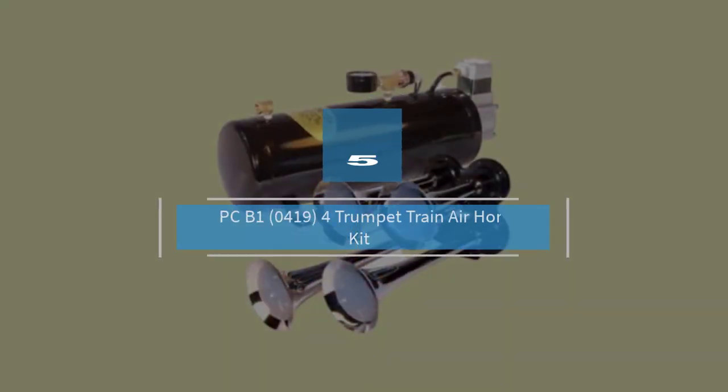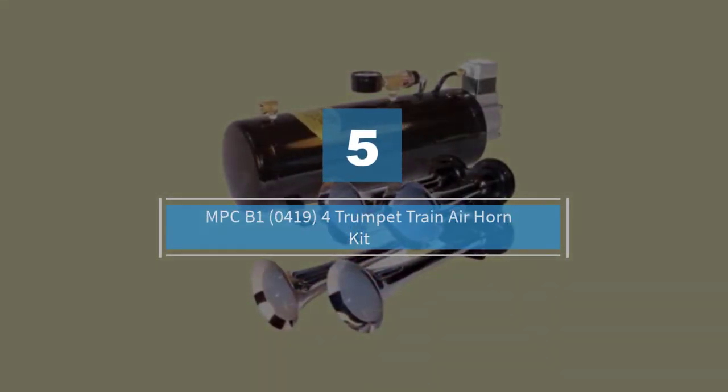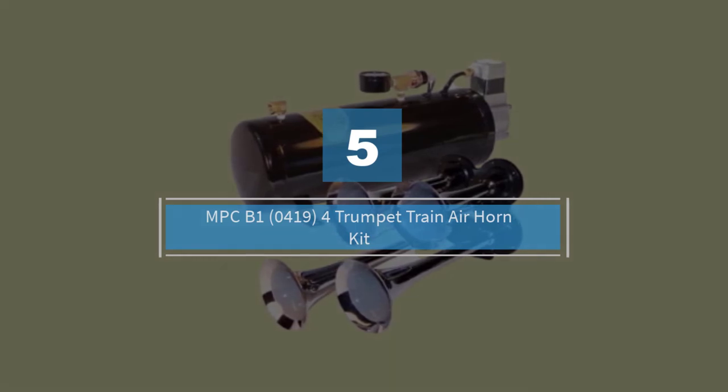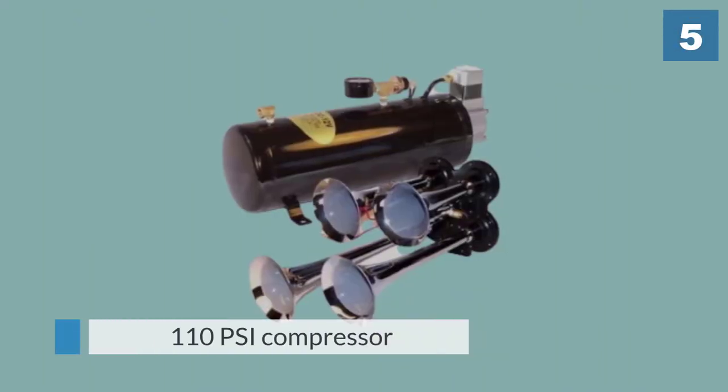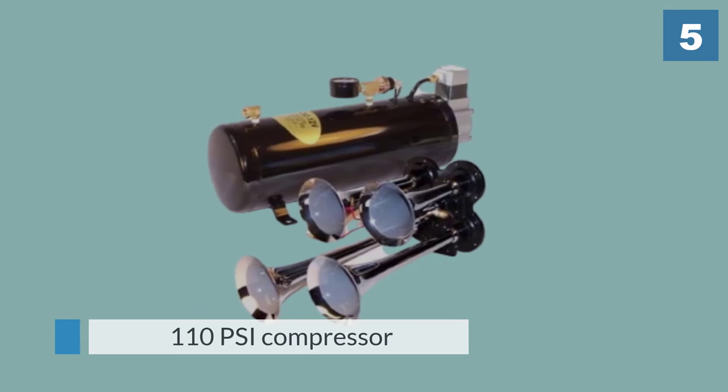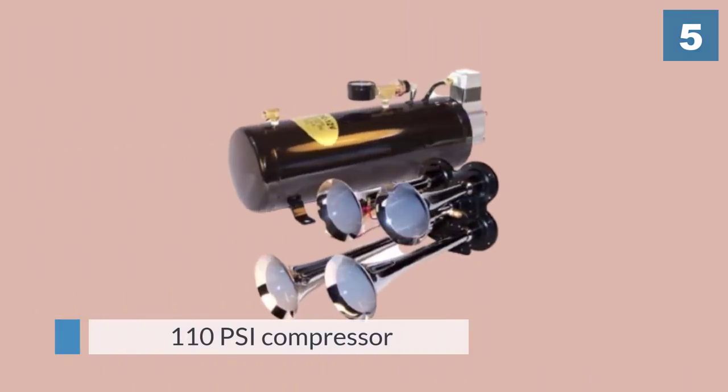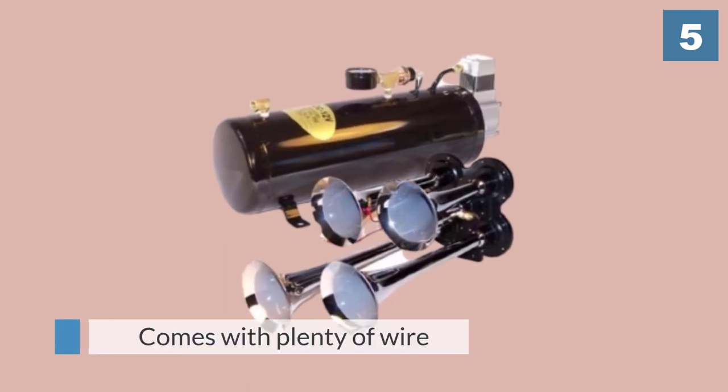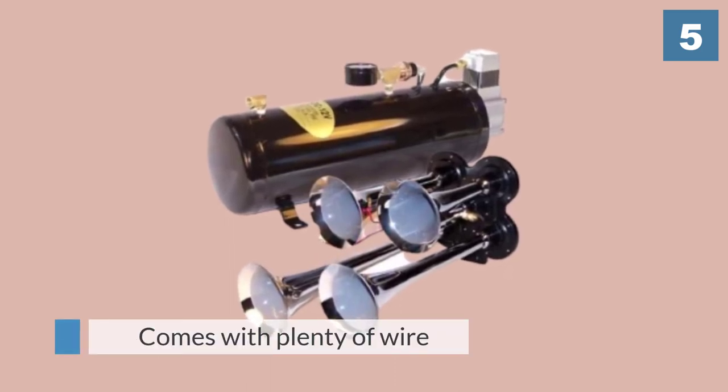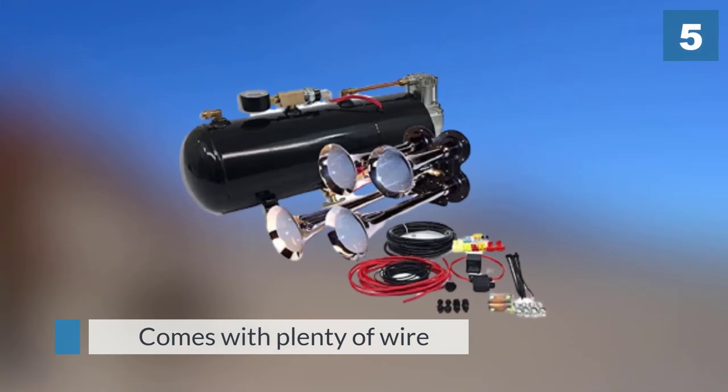Number five: MPC B1-0419 four trumpet train air horn kit. When you purchase this train horn kit from MPC, you get four chrome trumpet horns and an all-in-one air system. It has a 110 PSI compressor and an air tank that holds three liters. The kit also comes with plenty of wire, a 20 amp fuse, and a pressure switch.